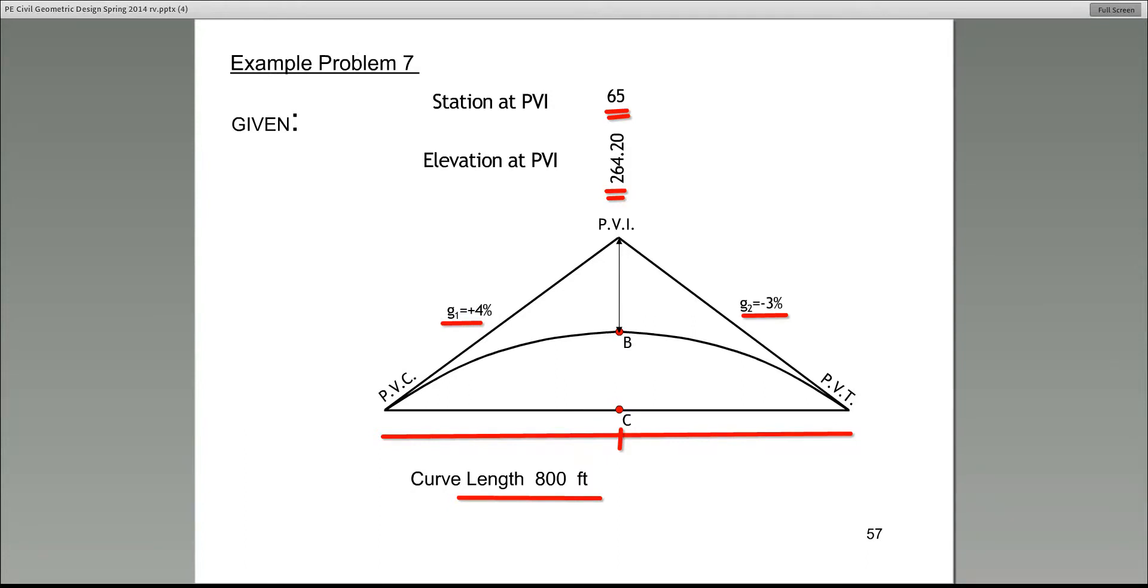If the station at PVI is 65, please tell me. Any one of these questions I'm asking you could be an independent question on the test. What is the station at PVC? Think about it. If the station at PVI is 65, what is the station at PVC? Well, that is the function of how long the curve is. So everything is symmetrical about this parabolic curve. So Amanda is saying 61. Amanda is correct. And how do we do it? Well, if the entire curve is 800 feet, C to PVC would be 400 feet. And C to PVT would be 400 feet. So the answer is 61.